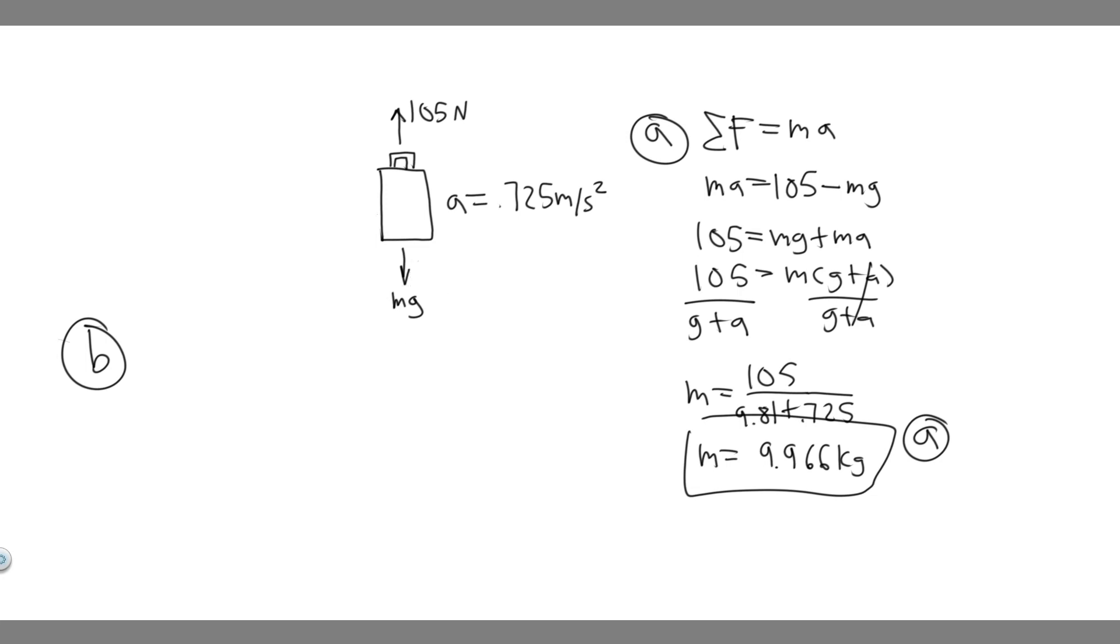So all we got to do is take the mass of the suitcase, which we found in the last problem, which is 9.966, and then multiply it by g, which is 9.81. So basically just do 9.966 times 9.81.